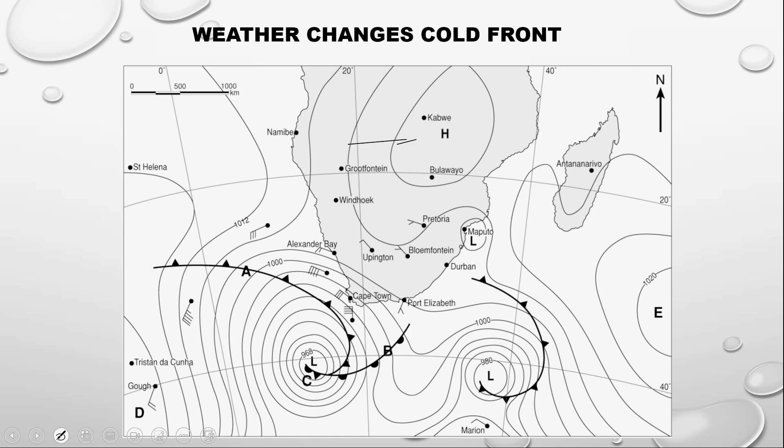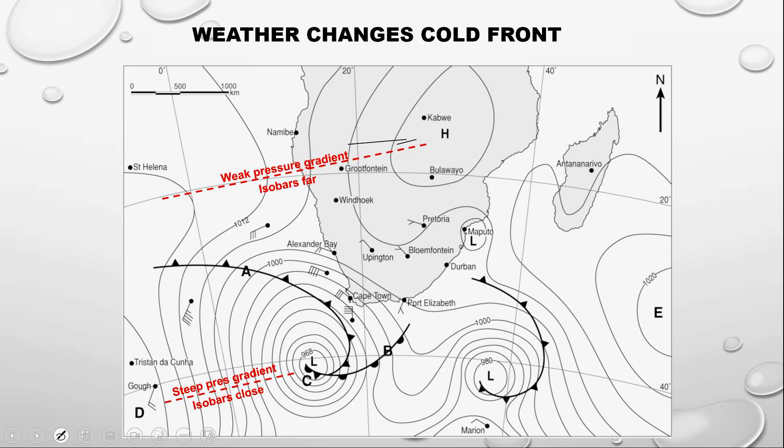Let us look at this synoptic weather chart. You can see that it's a very heavily summarized chart, and it will cover quite a few areas that ultimately focus on the weather changes. There's a weak pressure gradient illustrated there. How do you tell if a pressure gradient is weak? We are going to be looking at the isobars. You can see very well that they are well-spaced — isobars are far apart from each other. So you either say it's a weak pressure gradient, or you can say it is a gentle pressure gradient.